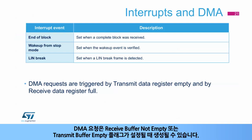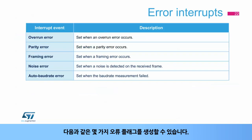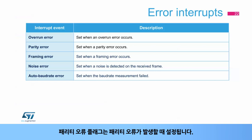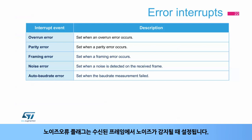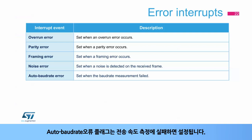DMA requests can be generated when the receive buffer not empty or transmit buffer empty flags are set. Several error flags can also be generated: the overrun error flag is set when an overrun error occurs, the parity error flag is set when a parity error occurs, the framing error flag is set when a framing error occurs, the noise error flag is set when noise is detected on the received frame, and the auto-baud rate error flag is set when baud rate measurement fails.